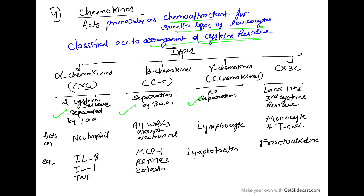Alpha chemokines have two cysteine residues separated by one amino acid. Beta chemokines have residues separated by three amino acids. Gamma chemokines have no separation. CX3C chemokines lack the first and third cysteine residues. Alpha acts on neutrophils, beta acts on all WBCs except neutrophils, gamma acts on lymphocytes, and CX3C acts on monocytes and T cells.